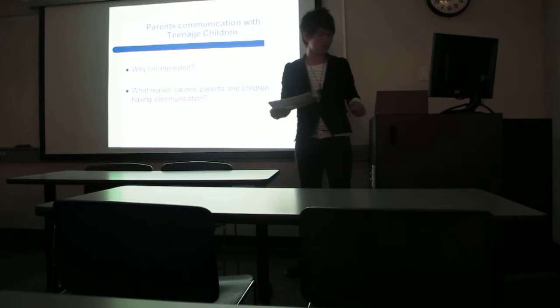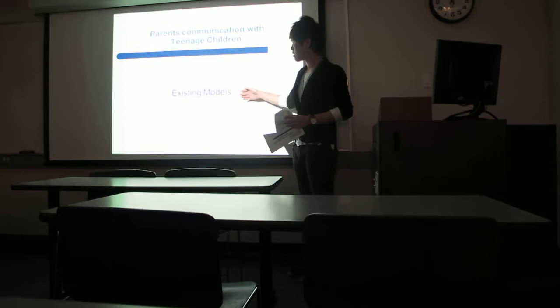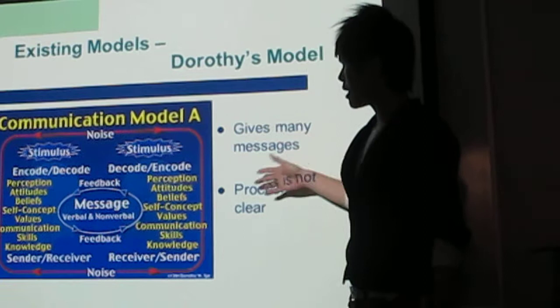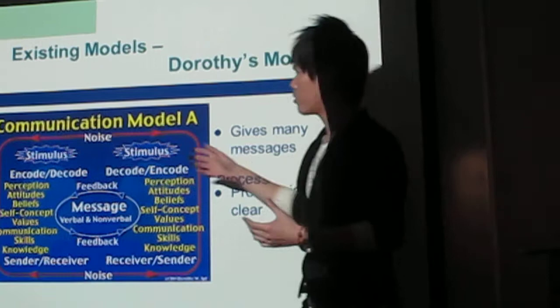The next part is the existing models. I will show you three models I found, but I just choose one to compare with my model. The first model is the raw list model. This model gives many messages, but the process is not very clear. We don't know which is first and which is second and so on.